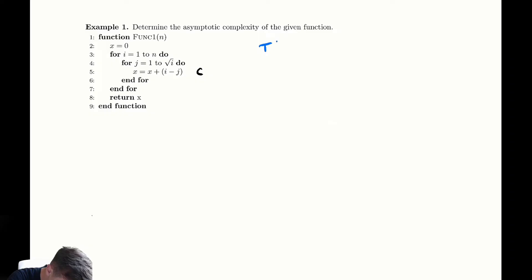We could write t of n, that's our runtime as a function of n, as the sum from i equals one to n and then the sum from j equals one to radical i of the cost of one iteration which is c.